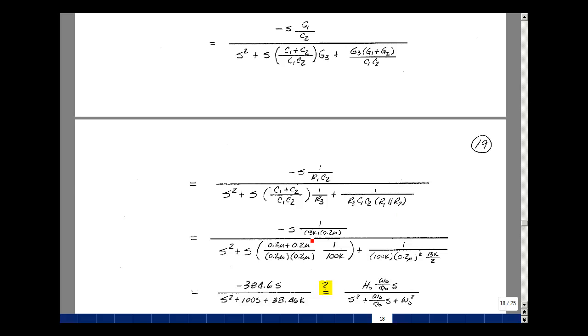R1 was 13k, and C2 was 0.2 microfarads, and C1 was also 0.2 microfarads. R3 is 100k. We have C1 times C2 is 0.2 microfarads squared.